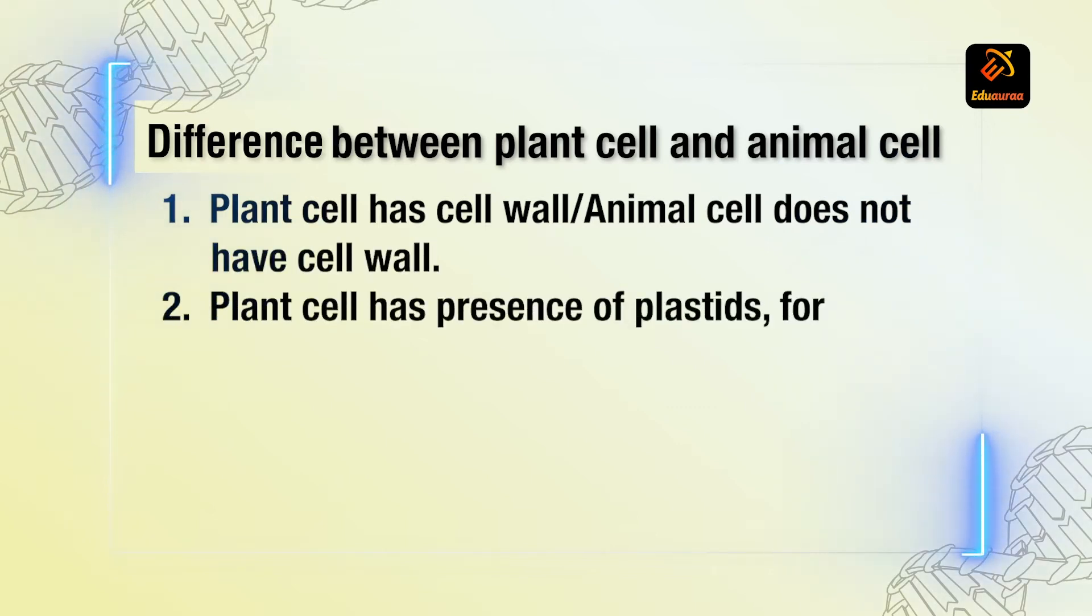Plant cell has presence of plastids, for example chloroplast. Animal cell does not have plastids.